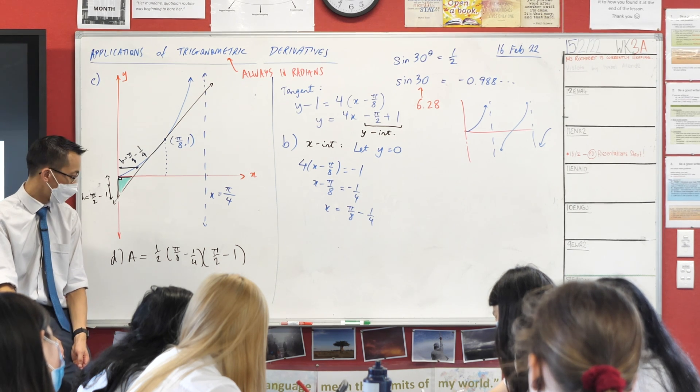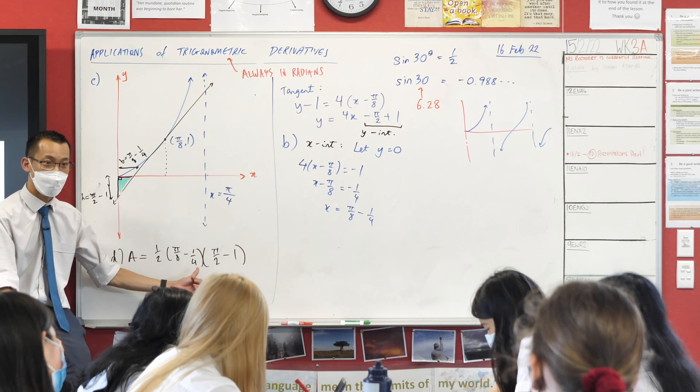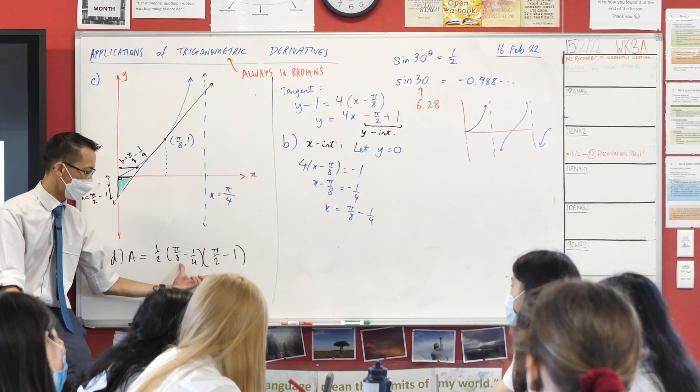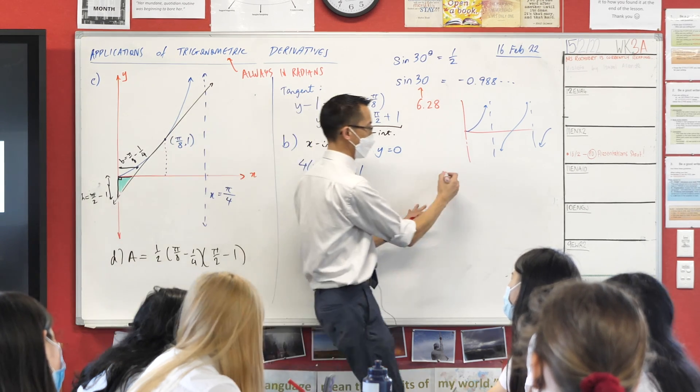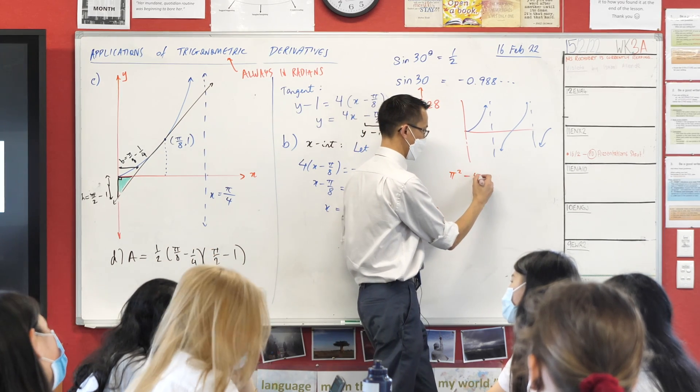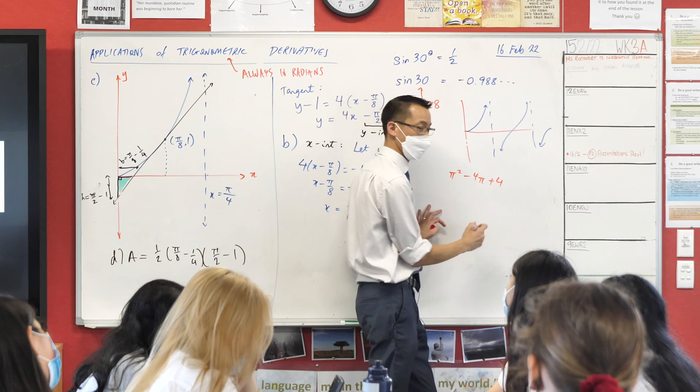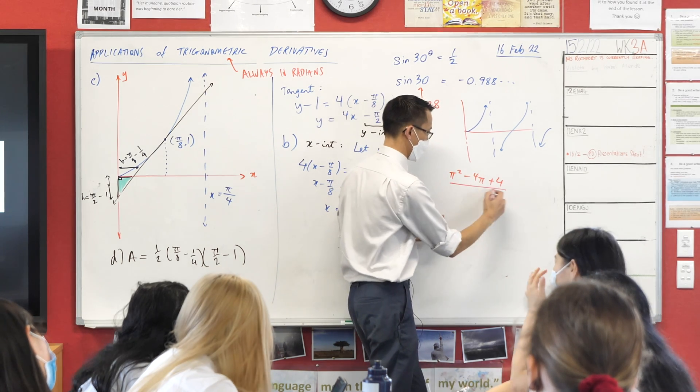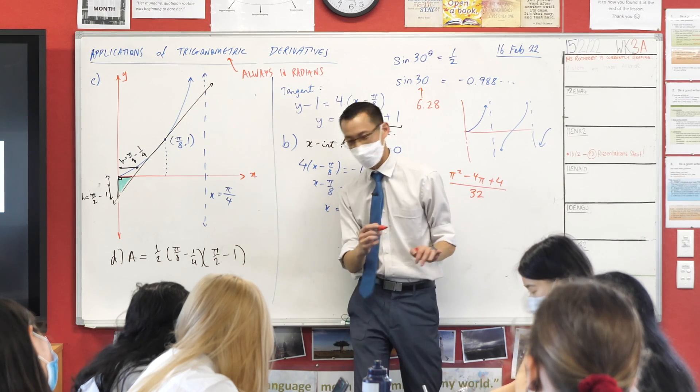What do you reckon, Daniel? I expanded it completely and then you end up with π squared minus 4π plus 4. Hold on, slow down. Say that one more time. π squared minus 4π plus 4. You end up with that. It takes a couple of lines. And then you can, over 32. Over 32. I did think there were some fractions that should be there. Yeah, very good.